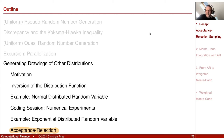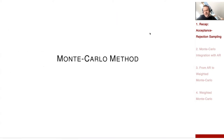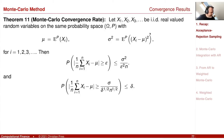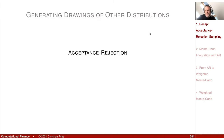The broader context for why we are generating these sequences is the Monte Carlo method. We want to approximate the expectation mu by our Monte Carlo approximation. Today I will return to the acceptance-rejection method.